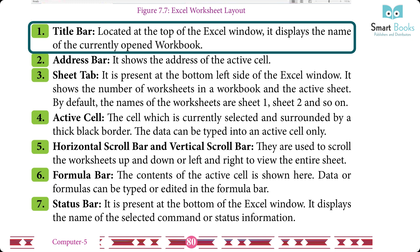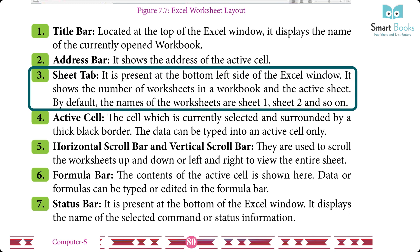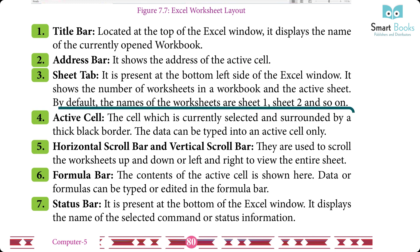Components of a worksheet: One — Title Bar: located at the top of the Excel window, it displays the name of the currently opened workbook. Two — Address Bar: it shows the address of the active cell. Three — Sheet Tab: present at the bottom left side of the Excel window, it shows the number of worksheets in a workbook and the active sheet. By default, worksheets are named Sheet1, Sheet2, and so on. Four — Active Cell: the cell currently selected, surrounded by a thick black border; data can only be typed into the active cell.